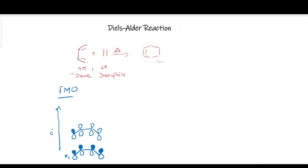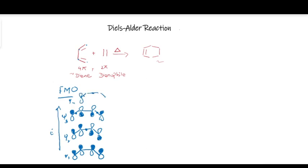ψ2 has one nodal plane. ψ3 has two nodal planes — the shaded part is up, then down, then down, then up. You can learn how to draw these molecular orbitals from another video linked here.